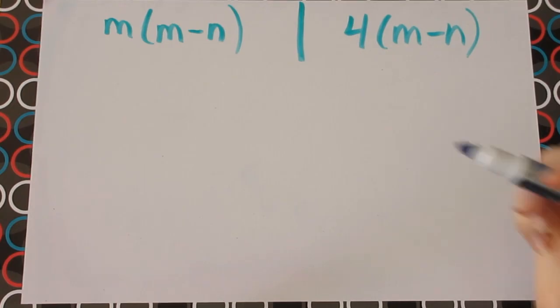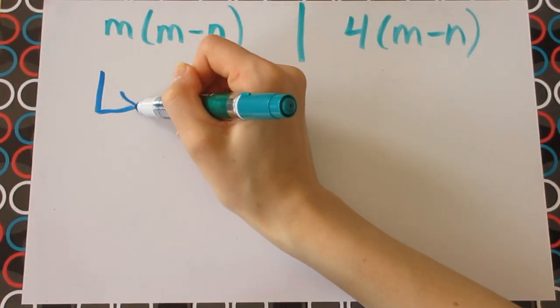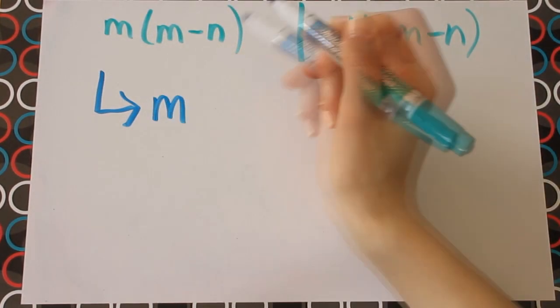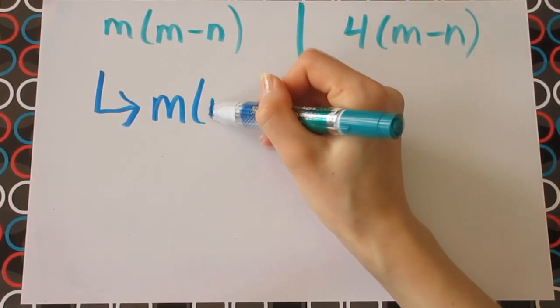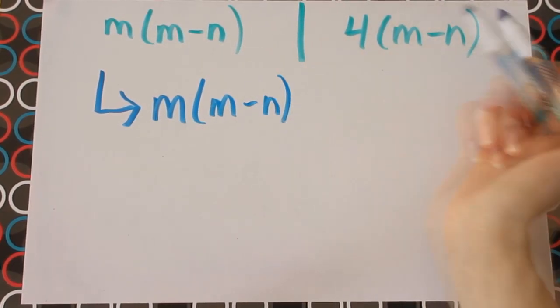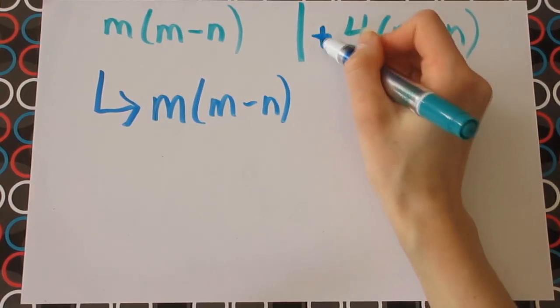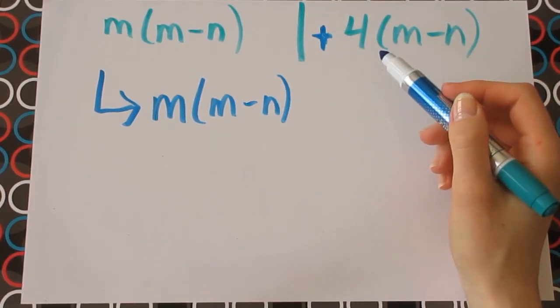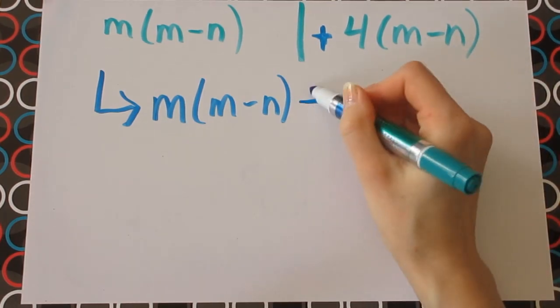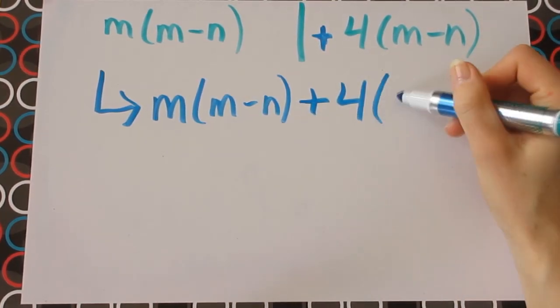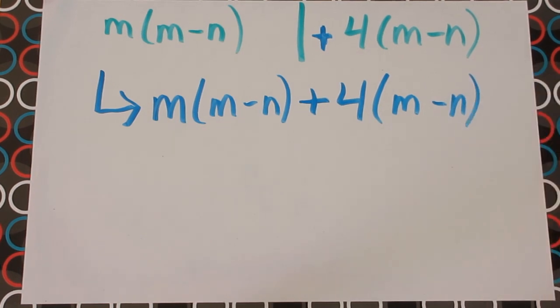Okay, this is a good start. Let's write all of this together. So putting this into one equation, we have m multiplied by m minus n. And then here we have a positive 4. We didn't write the positive sign originally, but we know that it was a positive 4, not a negative 4 that we factored out. So we write the plus 4 multiplied by m minus n.